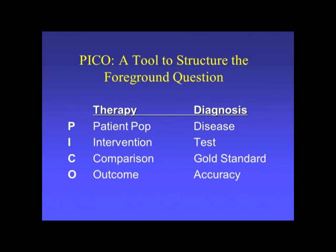This structure is called the PICO structure. It's fairly straightforward and fairly easy to do. It becomes easier as you develop baseline general knowledge about a particular clinical condition. Once you can do this in a straightforward way, you'll be able to generate the search terms required to go to particular resources to answer these questions. It is only a tool — a tool to help you get to the resources and information that you need.